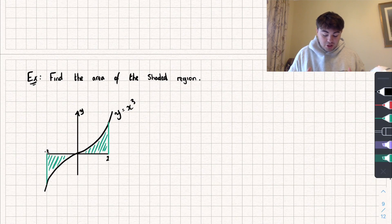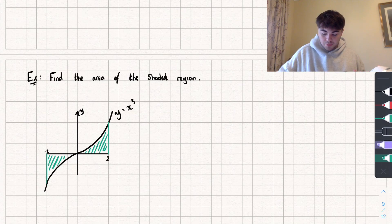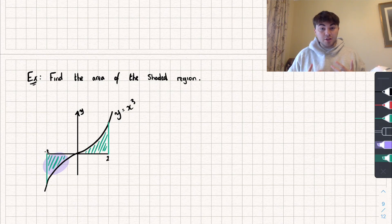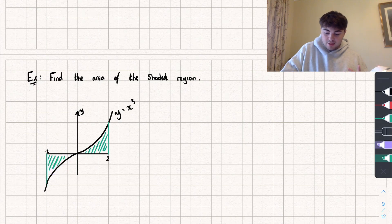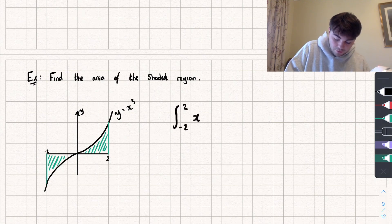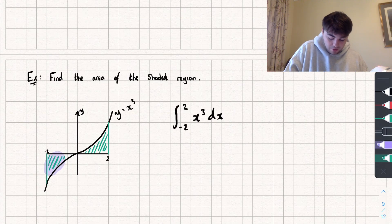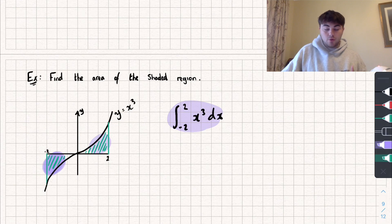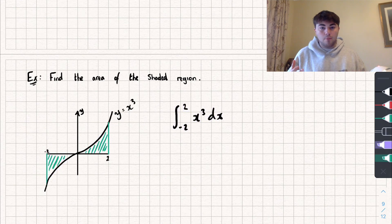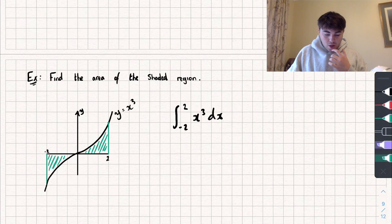For the next example, we're going to find the area of the shaded region underneath the curve y equals x cubed between the limits of negative 2 and positive 2. This example is slightly trickier, because if part of the curve is below the x-axis, its area is going to come out as a negative number. So if we calculated the definite integral between negative 2 and 2 of x cubed with respect to x, since the curve is symmetrical about the y-axis and our limits are symmetrical too, the result would be 0 — which is obviously wrong.